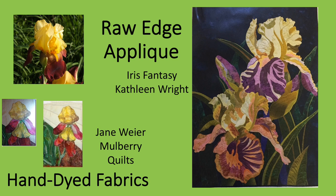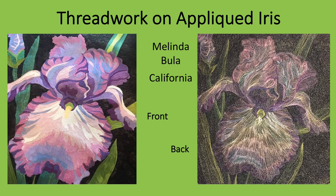Other quilters use raw edge appliqué, where they do not turn the edges under, but rather fuse and stitch down the pieces, which allows for more realistic ruffling and other small details. Some use hand-dyed fabrics, which bring color variations that add to their depictions of the iris. Thread work often enhances quilts, adding complexity. On the left is the front of Belinda Beulah's iris, and on the right is the back, showing the stitching that goes through all the layers. I flopped the photograph so you can more easily see the relationship between the appliqué pieces and the stitching over them.